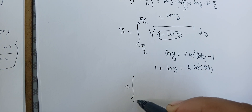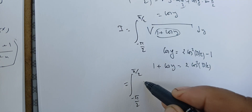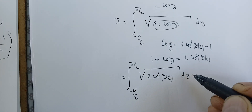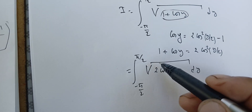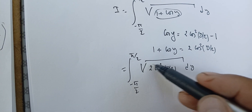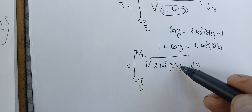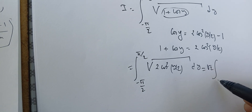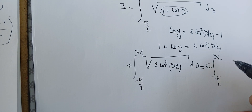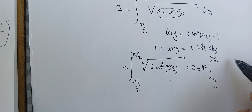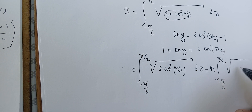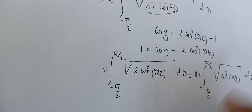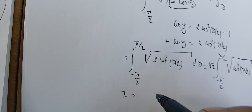Replacing 1 plus cosine y with 2 cosine squared of y over 2, I get the integral from minus pi over 2 to pi over 2 of the square root of 2 cosine squared of y over 2 dy. I can split this as the square root of 2 times the square root of cosine squared of y over 2, and factor the square root of 2 outside the integral.